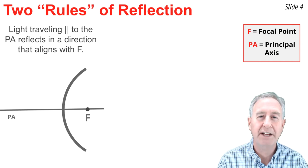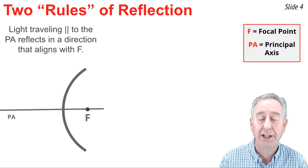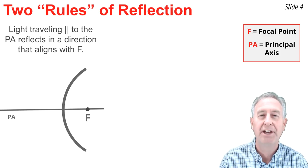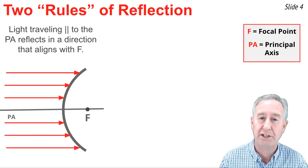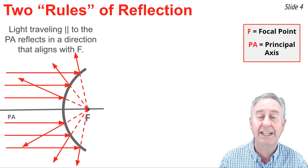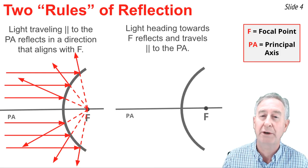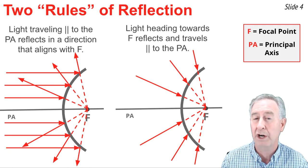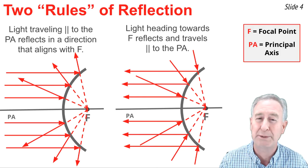Any ray of light that reflects off a convex mirror will reflect according to the law of reflection. But there's two special rules that will help us draw ray diagrams. The first is that a ray of light traveling parallel to the principal axis will reflect in line with the focal point as shown. The second rule is that a ray of light heading towards the focal point will hit the mirror before it reaches it, then it will reflect parallel to the principal axis.